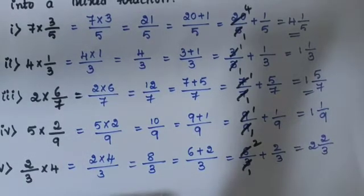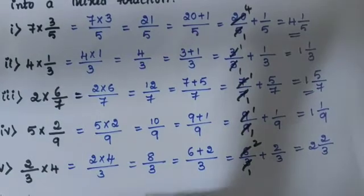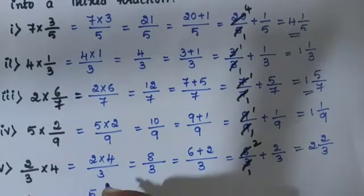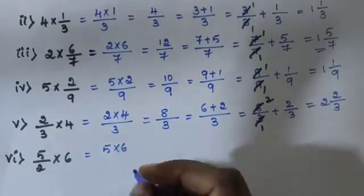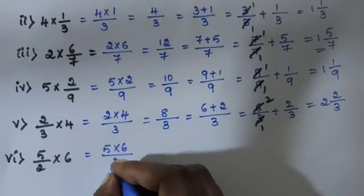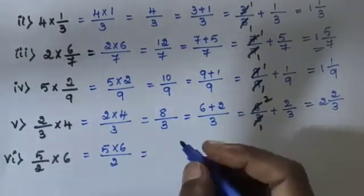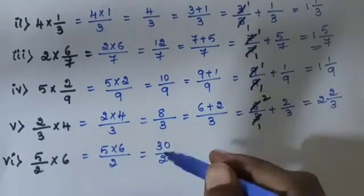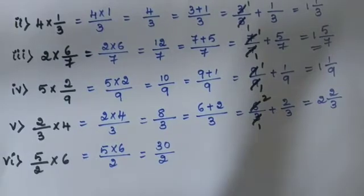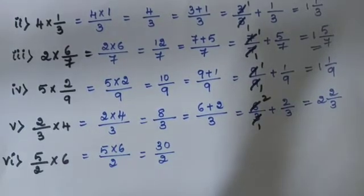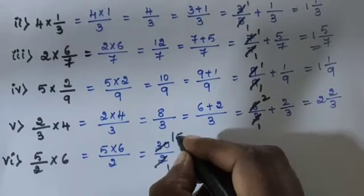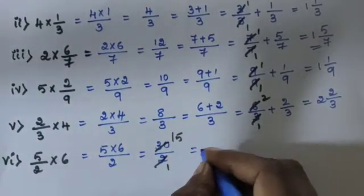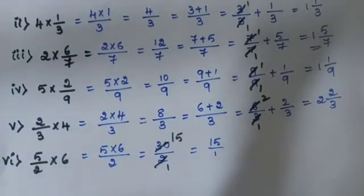Sub-question 6: 5 by 2 into 6. 5 is the numerator, 6 is the whole number, 2 is the denominator. 5 into 6 is 30, divided by 2. 30 divided by 2 — convert: 2 into 15 is 30. Answer is 15, or 15 by 1.